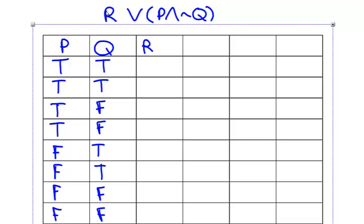And our final column for R will alternate true, false, true, false all the way down to the bottom.